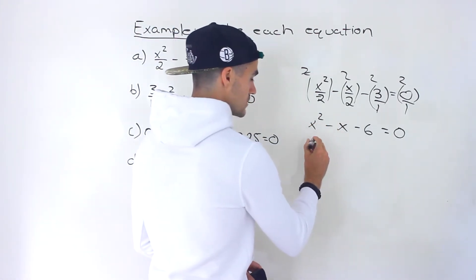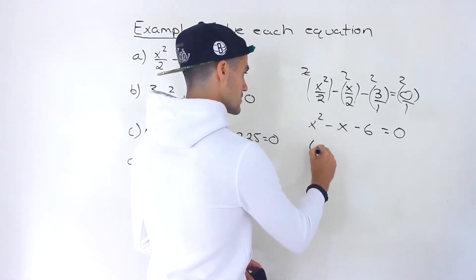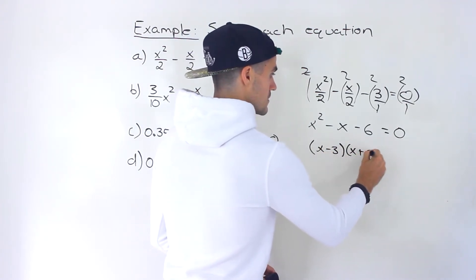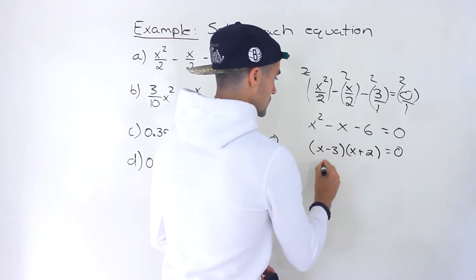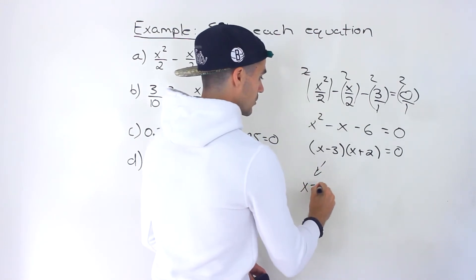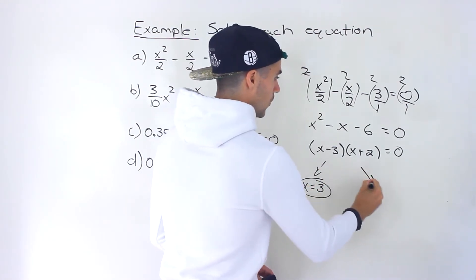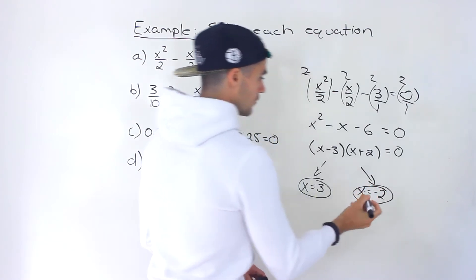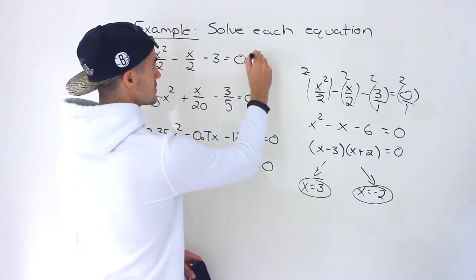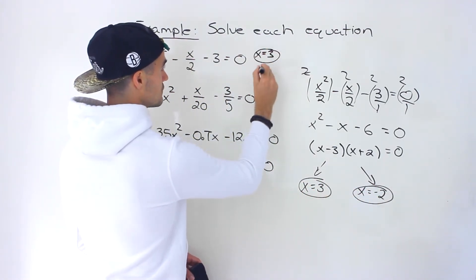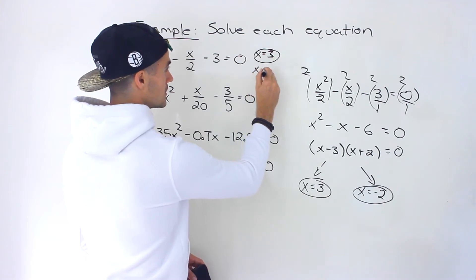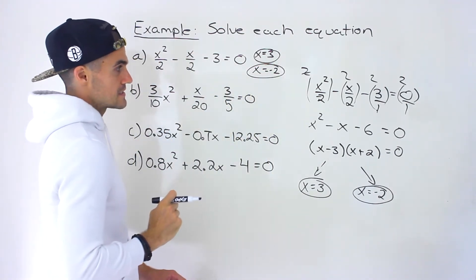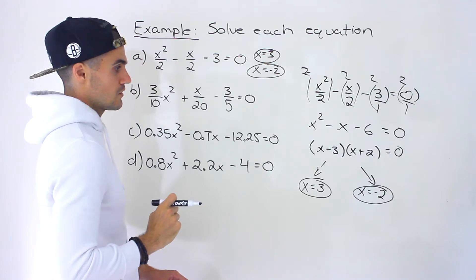When you solve this, it factors into x minus three times x plus two, equal to zero. So we end up with x equaling three, or x equaling negative two — those are the two solutions. You could check these if you want by plugging them into the original equation and making sure the left side equals the right side.